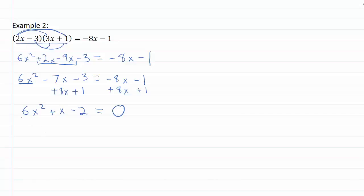Now that everything is set equal to zero, I'm ready to factor. So when I factor, looking for something that will multiply to this six x, let's try three x and two x. Then I need something to multiply to this negative two, so let's try plus two and minus one.